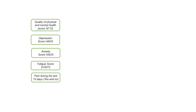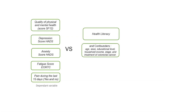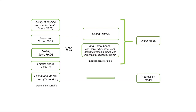On the other hand, to evaluate the mental and physical health status of our participants, we took into account six indicators: quality of physical and mental health, depression, anxiety, fatigue, and pain. After using bivariate analysis to compare these variables with health literacy, we constructed multiple analysis to test the independent relationship between them.